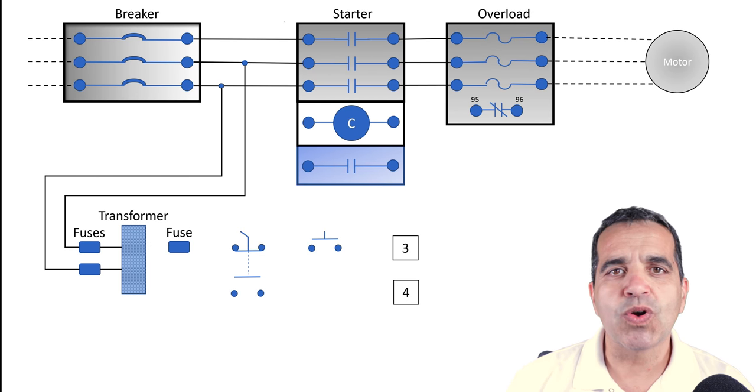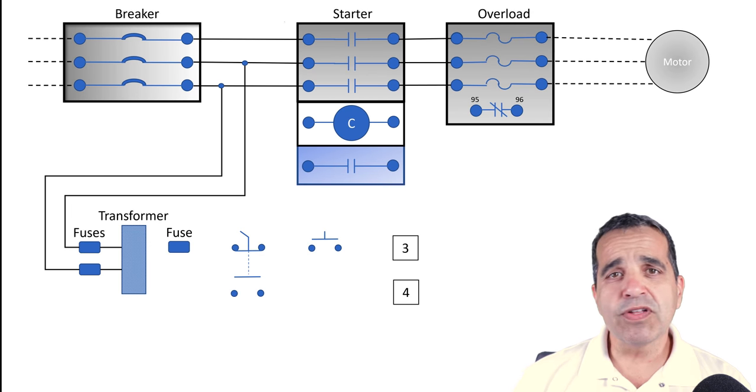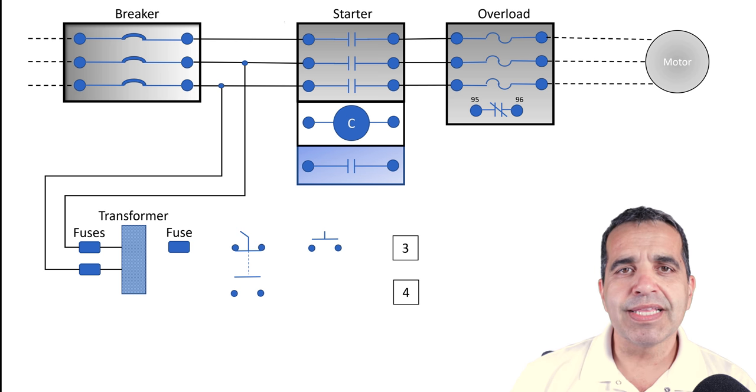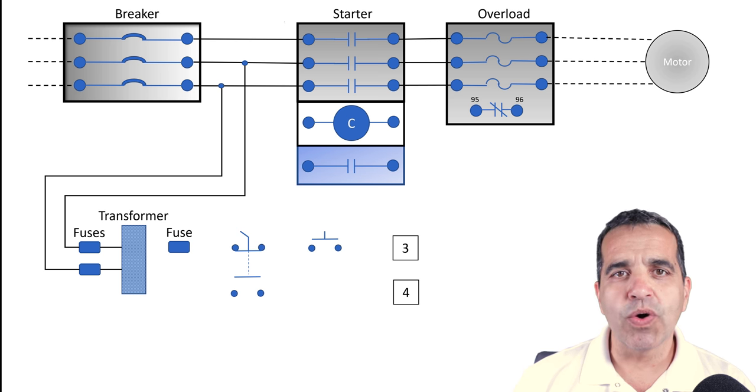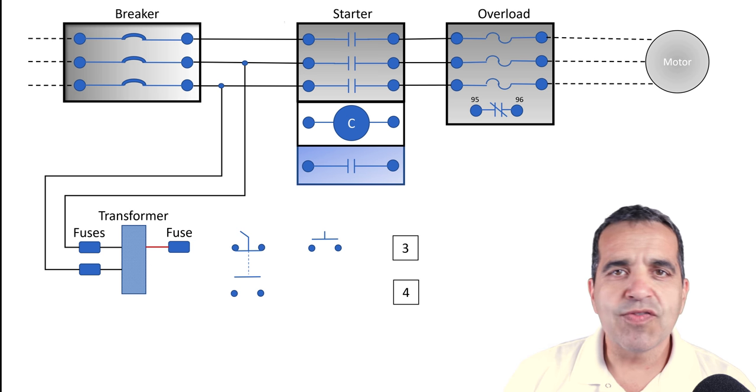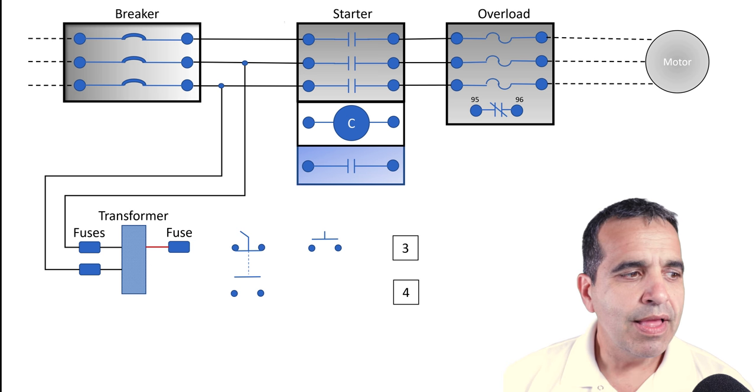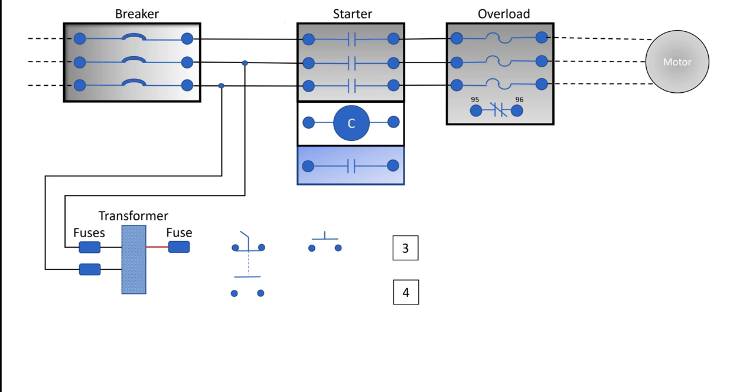We're going to use that 120 volts control power for our coil or any field devices that we have, but ultimately that control power is feeding our coil. From the transformer, we feed our fuse and we also come from the transformer with our neutral. That neutral will feed our overload contact.